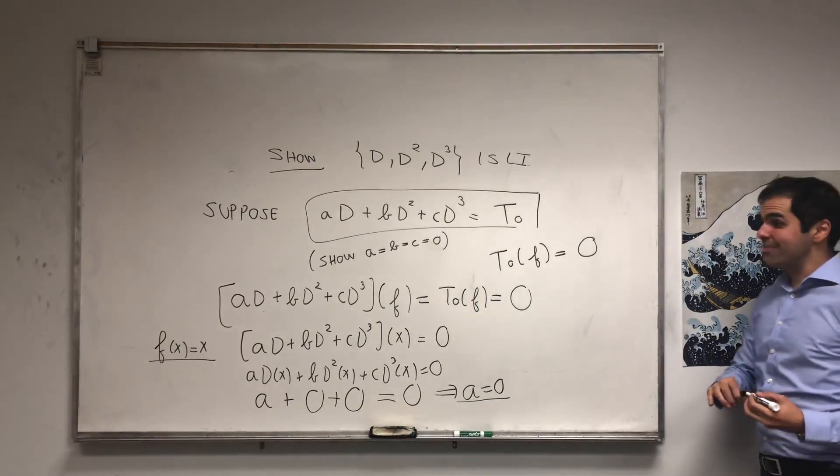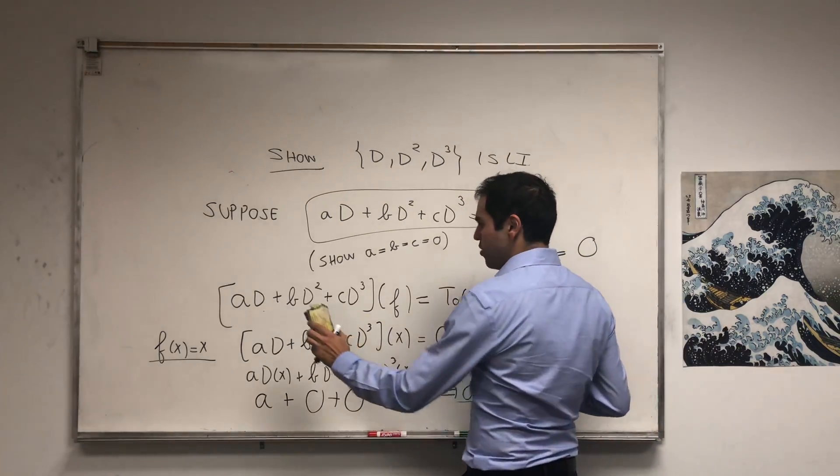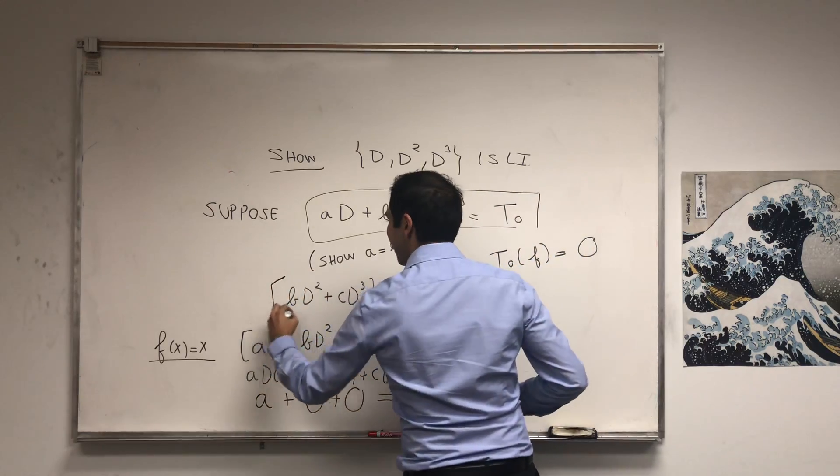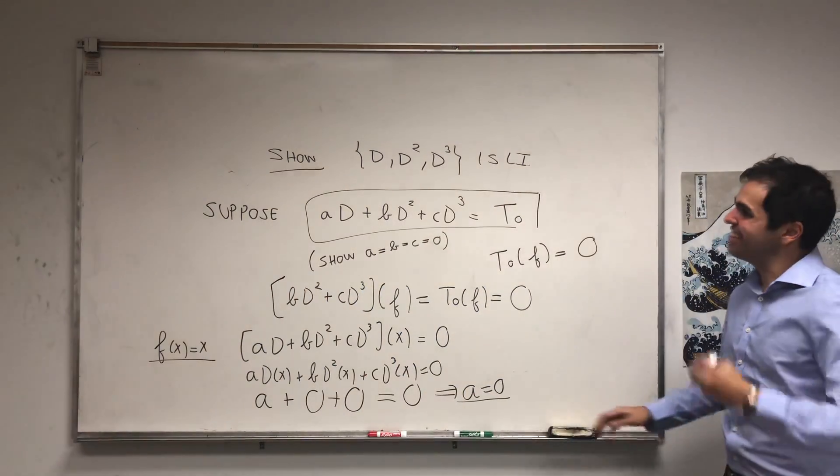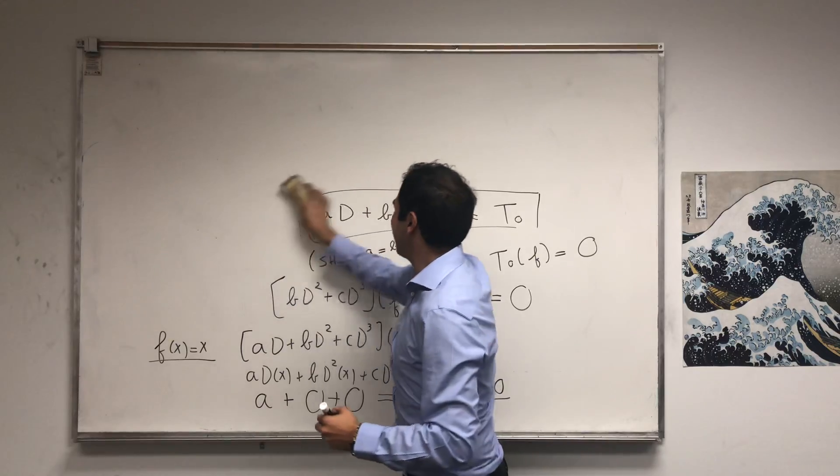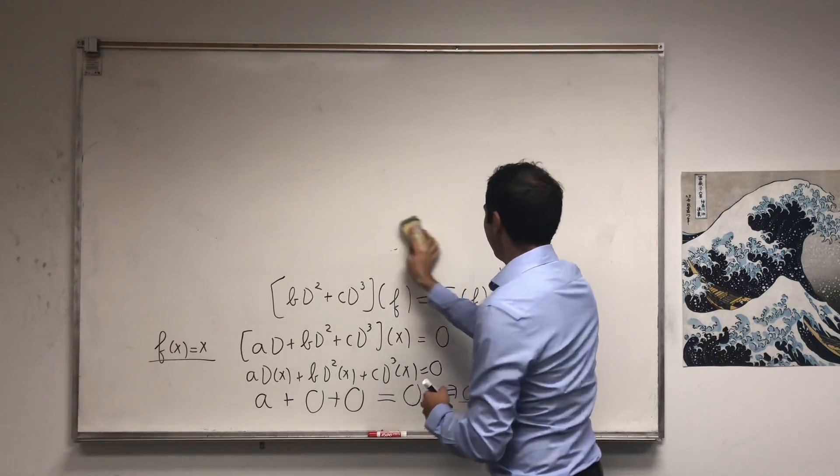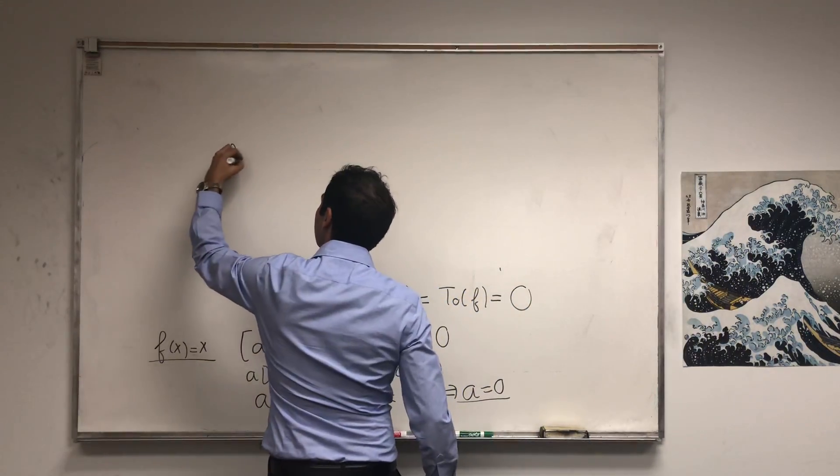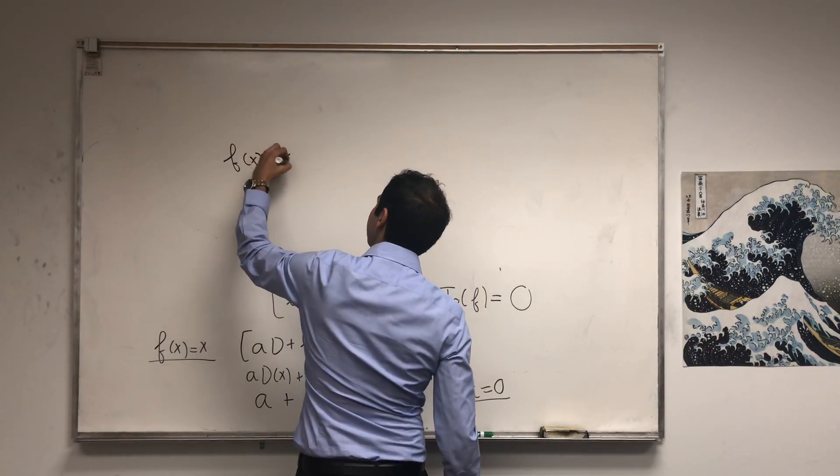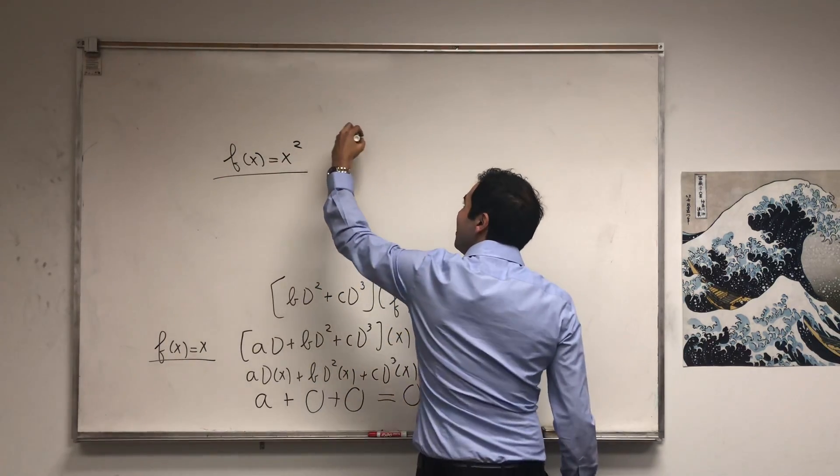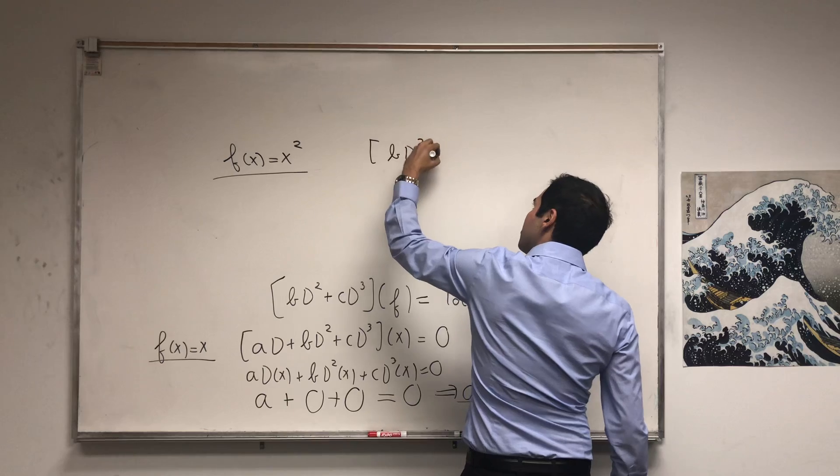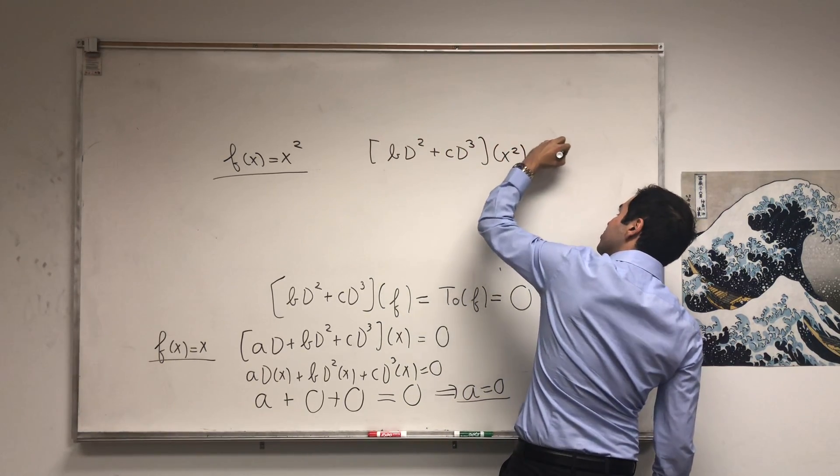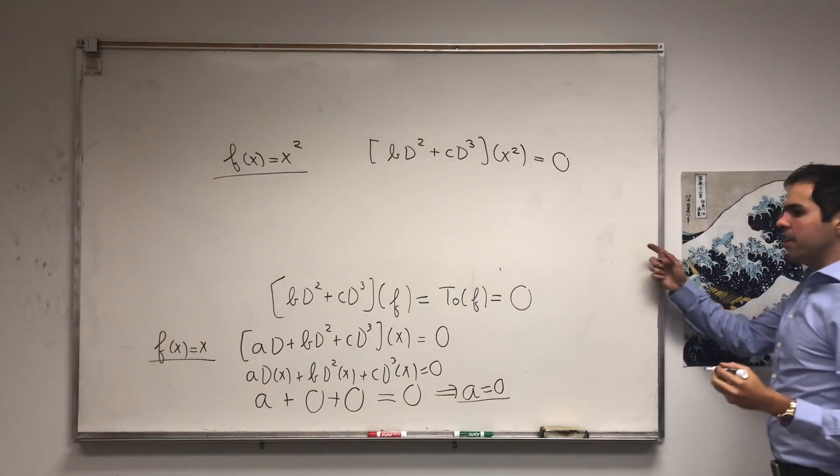Which is great because it means in this equality you don't have to worry about a anymore. All right, so this was so much fun, and as like teletubbies say, again again! So let's just apply more complicated functions. Well, we have x, let's try x². f(x) equals x², then we get bD² + cD³ of x² equals zero.